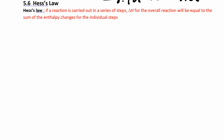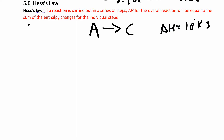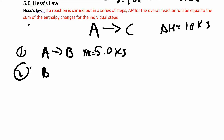Enthalpy is a state function, which means it's pathway independent — it doesn't matter how you get from A to B. The difference in energy from A to B is the same whether you went one pathway or another. For example, if I had a reaction A goes to C and the enthalpy of that reaction was 10 kilojoules, suppose I broke that up into different steps: A goes to B with a delta H of 5 kilojoules, and then step 2 was B goes to C with a delta H of 5 kilojoules.